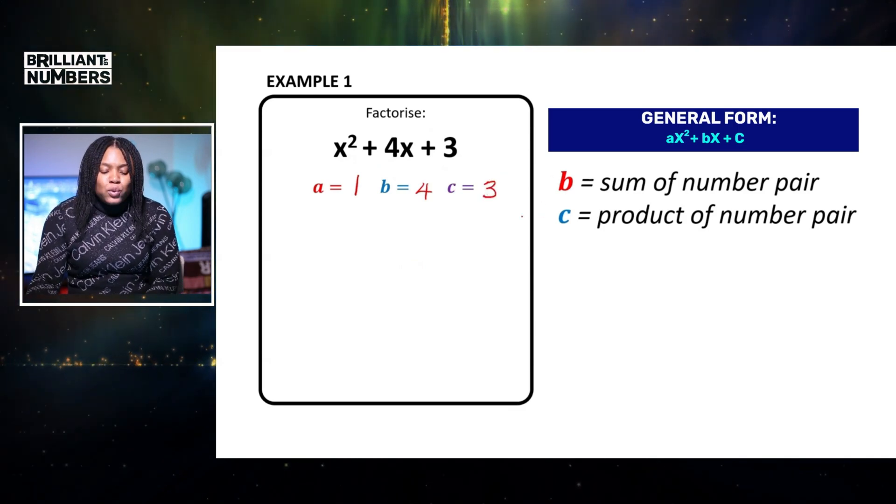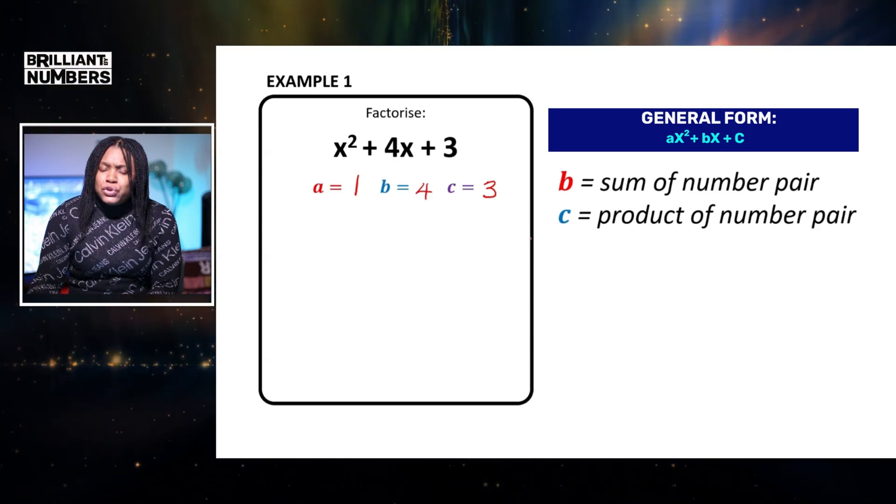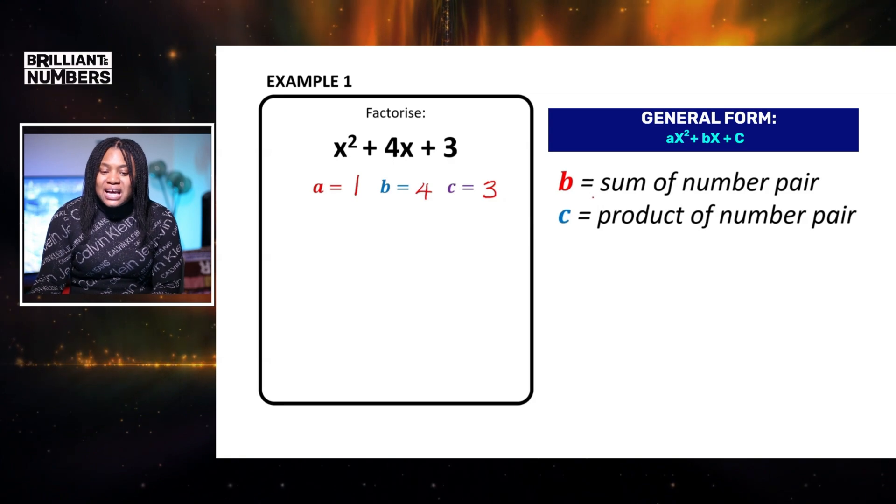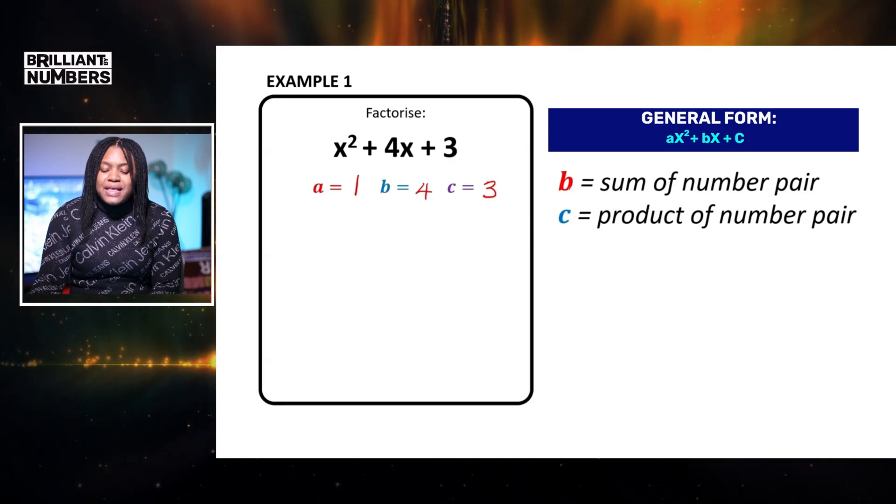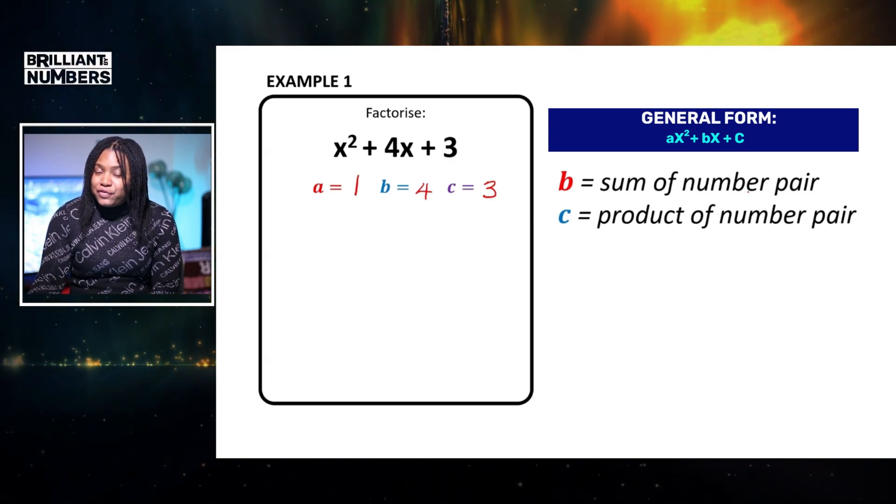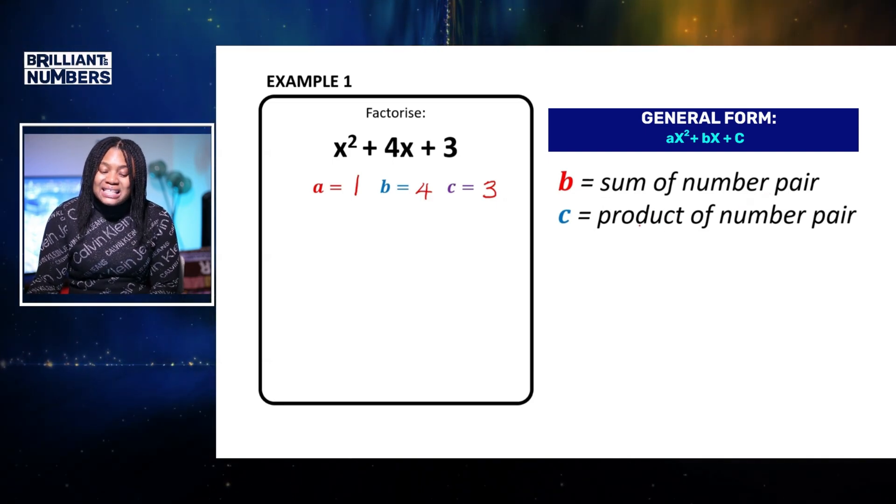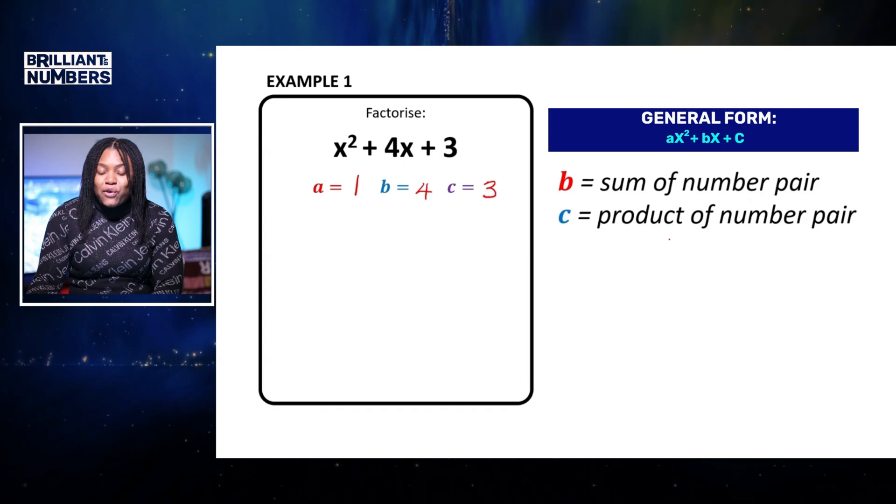Now, very important to note here, we do not need a to factorize our quadratics. As you can see along the side here, I have noted that b is the sum of the number pair that we have discussed on the previous slide, and c will be the product of the number pair.